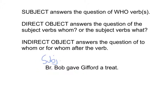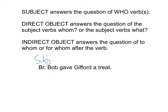Now let's look at the word Gifford. This one is a little bit trickier. Does Brother Bob give Gifford? Does he put Gifford on a plate and hand him away? No — so Gifford is not the direct object. It does not answer the question of what Brother Bob gives. Brother Bob is not giving Gifford away; he is keeping Gifford. Can Gifford be the indirect object? Brother Bob gives to Gifford or for Gifford? Yes, that works. So, we know in this instance that Gifford is the indirect object.